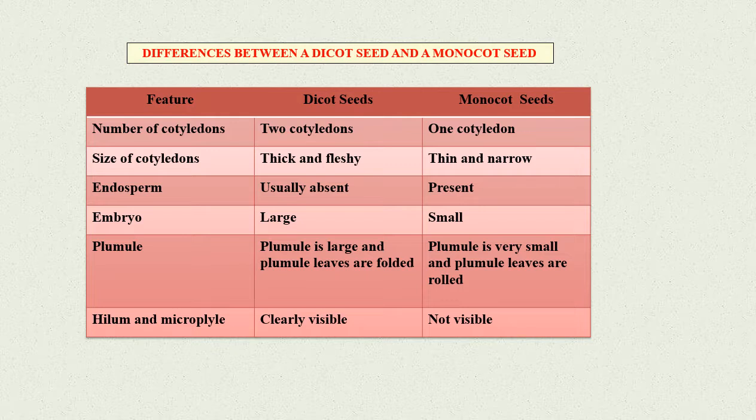Embryo: In dicot seeds, it is large. In monocot seeds, it is small.